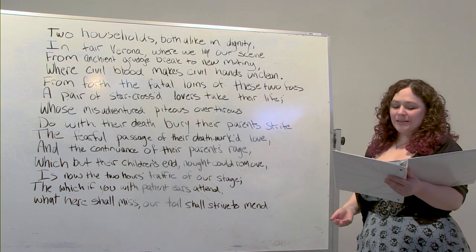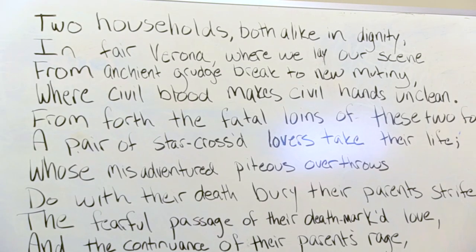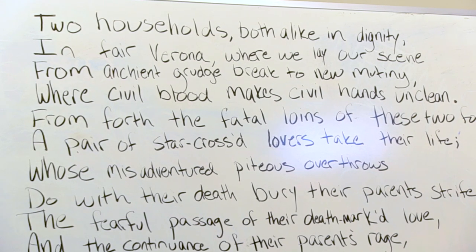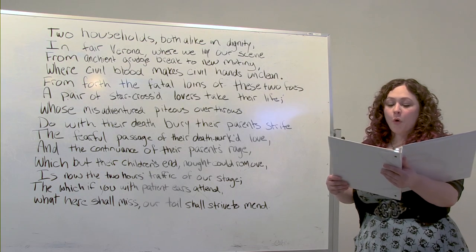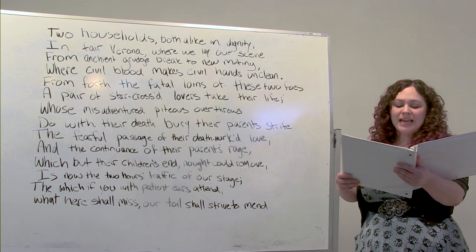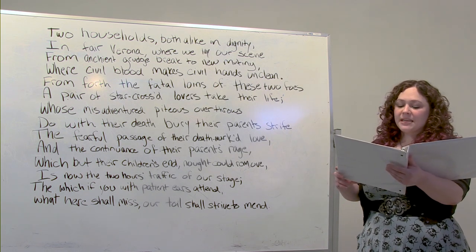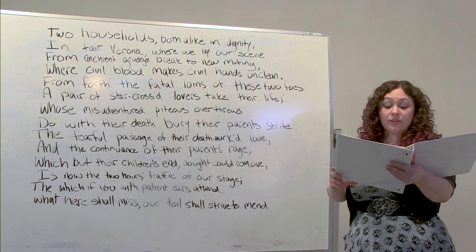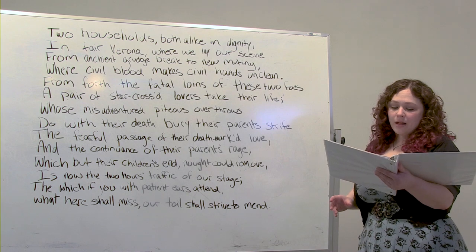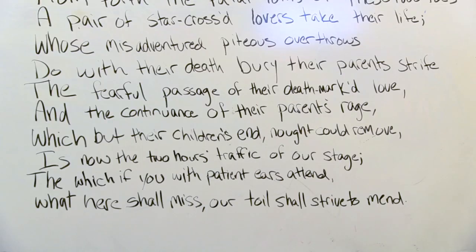Two households, both alike in dignity, in fair Verona where we lay our scene, from ancient grudge break to new mutiny, where civil blood makes civil hands unclean. From forth the fatal loins of these two foes, a pair of star-crossed lovers take their life, whose misadventures, piteous overthrows, do with their death bury their parents' strife. The fearful passage of their death-marked love, and the continuance of their parents' rage, which but their children's end not could remove, is now the two hours' traffic of our stage. The which, if you with patient ears attend, what here shall miss, our toil shall strive to mend.